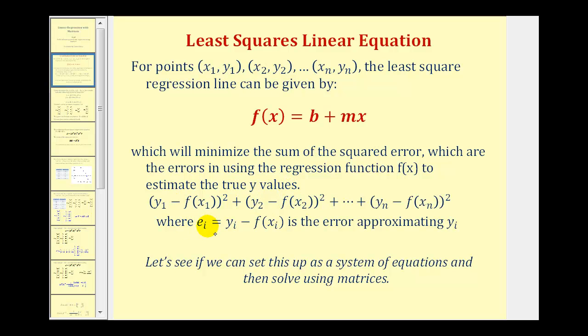So e sub i would be the error, or the difference between the true y value and the function value from the line. If we square all these errors, we have the sum of the squared errors.